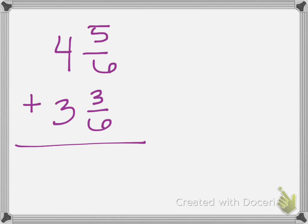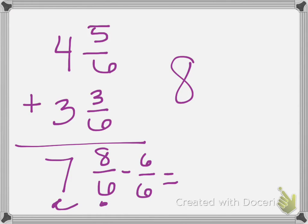Another example, 4 and 5 sixths plus 3 and 3 sixths. 5 sixths plus 3 sixths gives me 8 sixths, and 4 wholes plus 3 wholes gives me 7. Again I should notice that this fraction, I could take out 6 sixths and add that to my whole. So I'm going to take out my 6 sixths, which would leave me with 8 wholes, and I have 2 sixths left over.